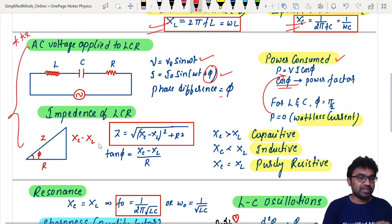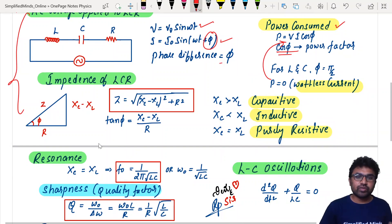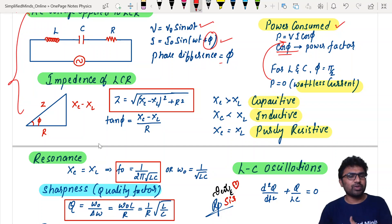Impedance of LCR circuit. Impedance Z is equal to square root of XL minus XC whole square plus R square, or you can say XC minus XL whole square. And many times there are questions asked directly based on what is capacitive circuit, inductive circuit, pure resistive. They'll give some values and they'll intermix with resonance conditions.